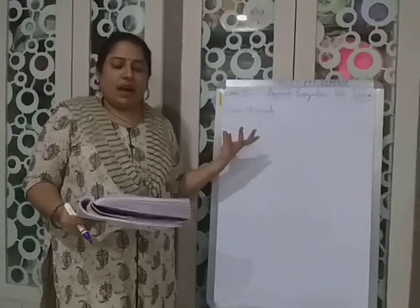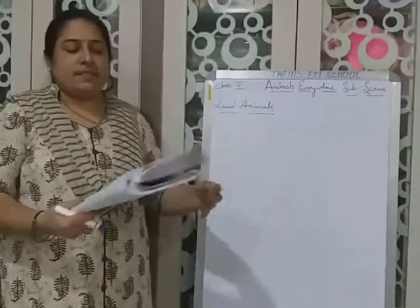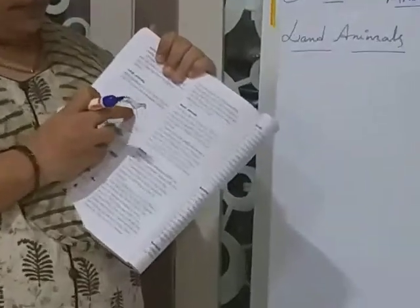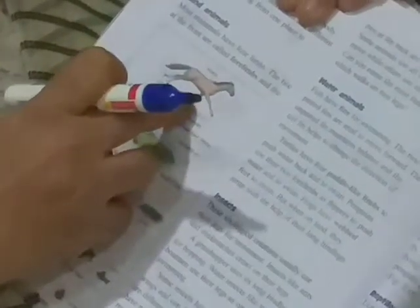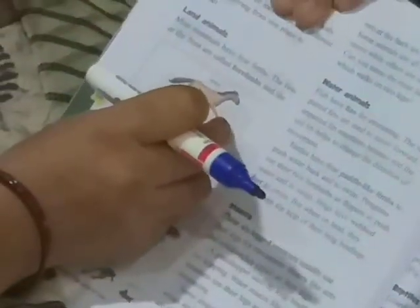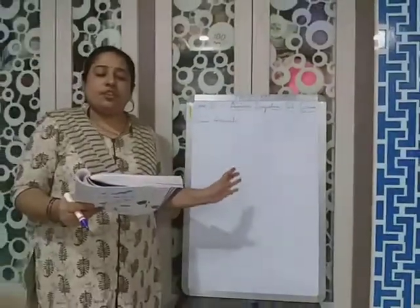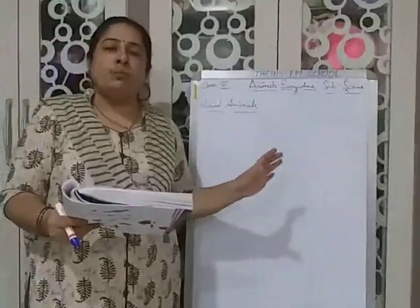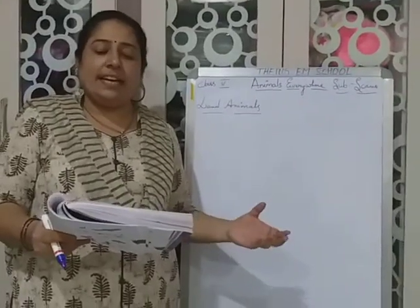The two limbs at the front are called forelimbs. See in the figure — these two front ones are called forelimbs. This is a horse. The front two limbs are called forelimbs, and the two at the back are called hind limbs. Some animals use all four limbs to move, while others use only the hind limbs.